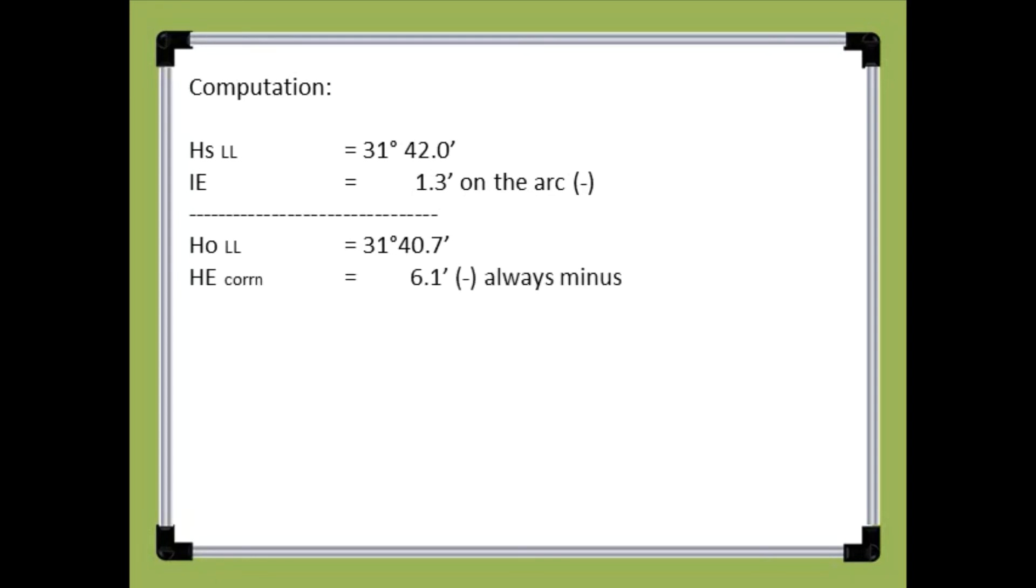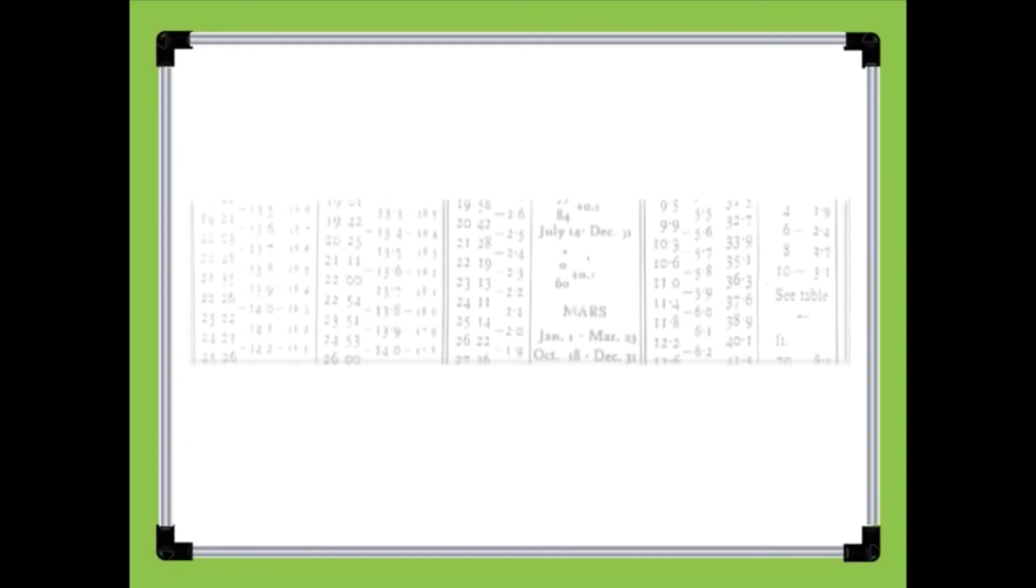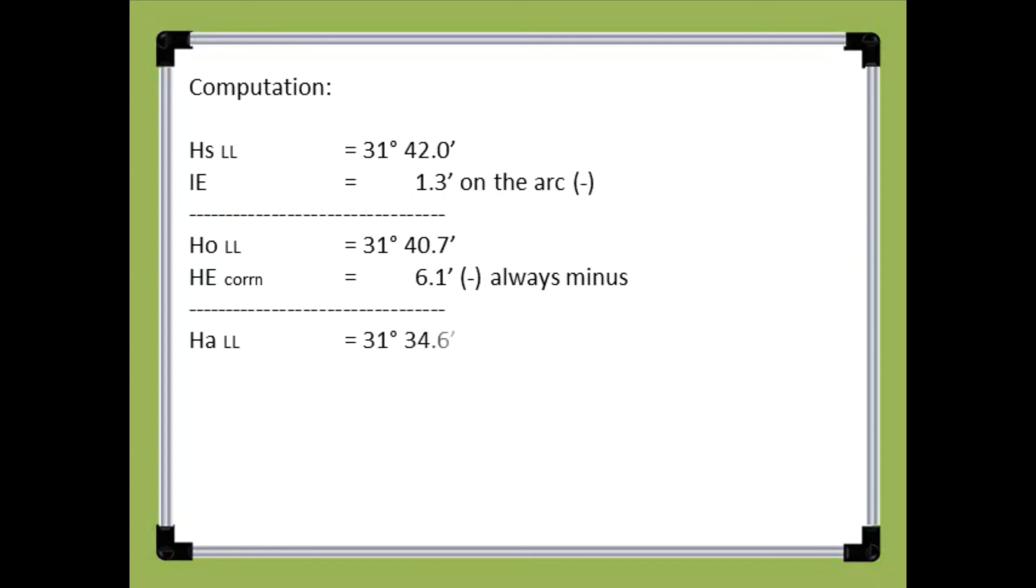Subtracted by the height of eye correction which is 6.1 minutes. The result is the sextant apparent altitude of the sun at lower limb which is 31 degrees 34.6 minutes.